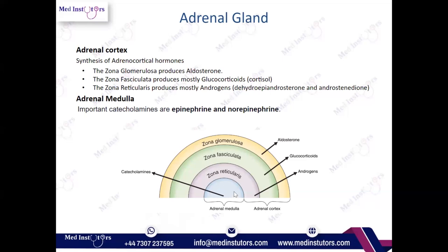The inner part, the adrenal medulla, creates catecholamines. The reason it creates catecholamines rather than cholesterol-based hormones is that during immunological development, the cortex and medulla originate from different layers, which is why they have different origins, different functions, and create different categories of hormones. The adrenal cortex hormones are all cholesterol-based, whereas catecholamines are different. The important catecholamines are epinephrine and norepinephrine. The adrenal medulla topic is simpler and less extensive than the adrenal cortex.